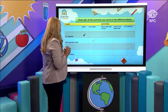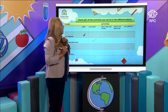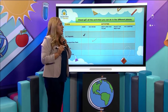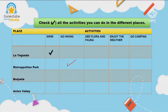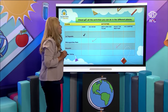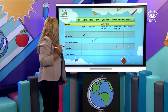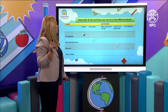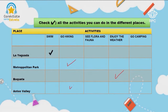Boquete — can I swim in Boquete? You can go hiking, see flora and fauna, enjoy the weather, or go camping. According to the reading, we enjoy the weather. Have you been in Boquete? It's very cold! Now, Anton Valley — what can you do there? You can swim, go hiking, see flora and fauna. According to the reading, we can go hiking, we also can see flora and fauna, and we can also enjoy the weather.